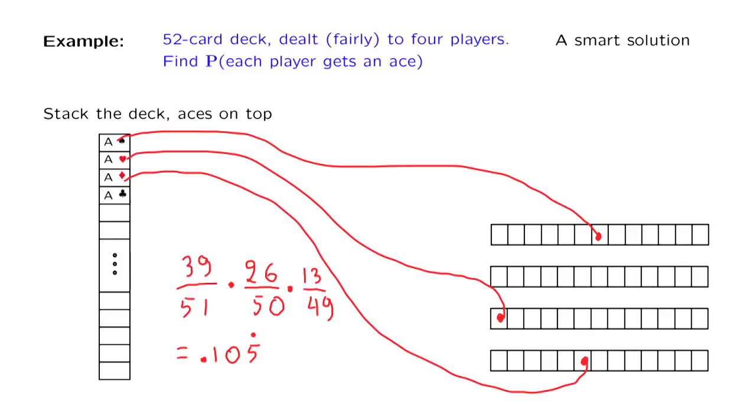So this was a faster way of getting to the answer to our problem compared to the previous one. But it raises a legitimate question. Is the way that we dealt the cards, by putting the aces on top and then dealing them, is that way a fair way of dealing the cards? Is it true that with this way of dealing the cards all partitions are equally likely? It turns out that this is indeed the case, but it does require a bit of thinking.